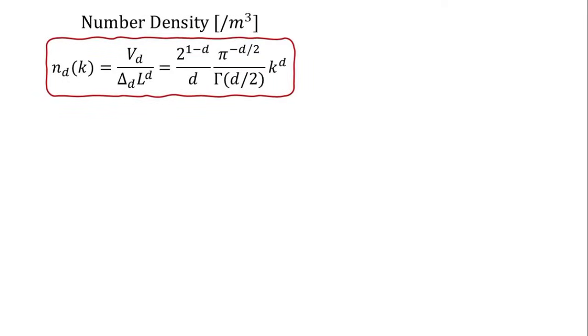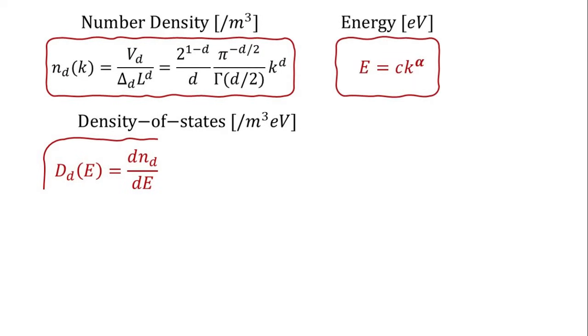The final expression for the number density is shown here. The number density, n d, represents the number of quantum states that encompasses all wave vectors up to k, per unit volume. In contrast, the density of states provides the number of quantum states per unit volume per unit energy. To obtain the density of states, we take the derivative of the number density with respect to energy. As a result, the density of states depends on how the energy of quantum states disperses in k, where the constants c and alpha are specific to materials.